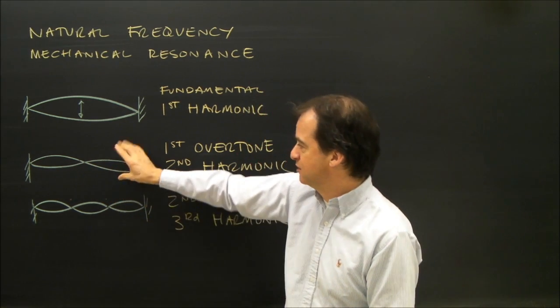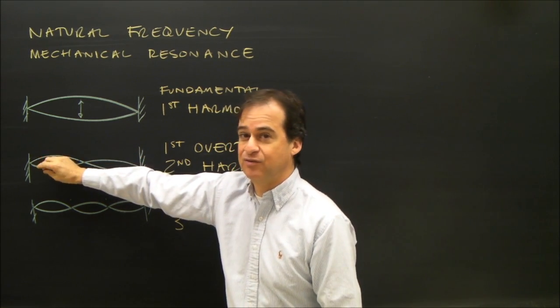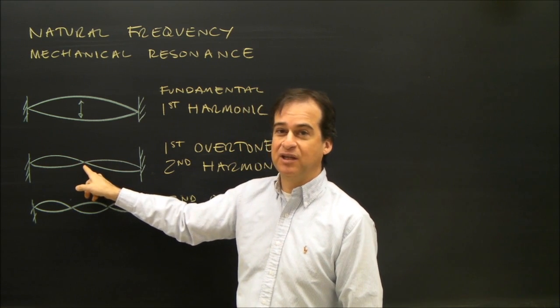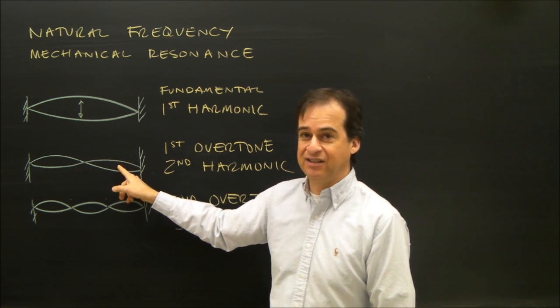That's when the string is vibrating like this. This side's vibrating up and down, this side's vibrating up and down, but nothing's happening here. We call that a node, and we call this an anti-node.